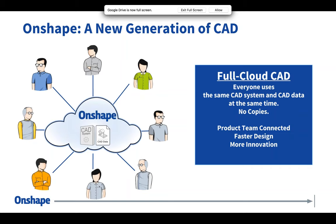Your distributed team doesn't have to transfer data back and forth, replace references, and work in individual sandboxes — they can all work at the same time, connected. There are no files in Onshape; each Onshape document is a database constantly tracking your changes. One of the biggest indications that the architecture is different is the history — I can see every single change that's ever happened to the document since it was created in Onshape, which you can't do in a file-based system.